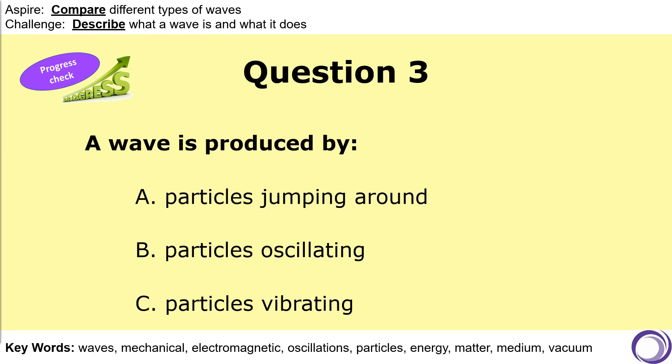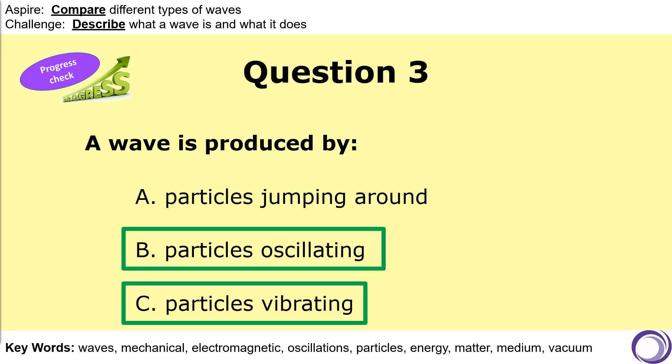Question three: what is it that a wave is produced by? Is it produced by particles jumping around, by particles oscillating, or by particles vibrating? Again, there are two correct answers to this question, which are B and C, because oscillating and vibrating are two words that can be used to describe the same thing.